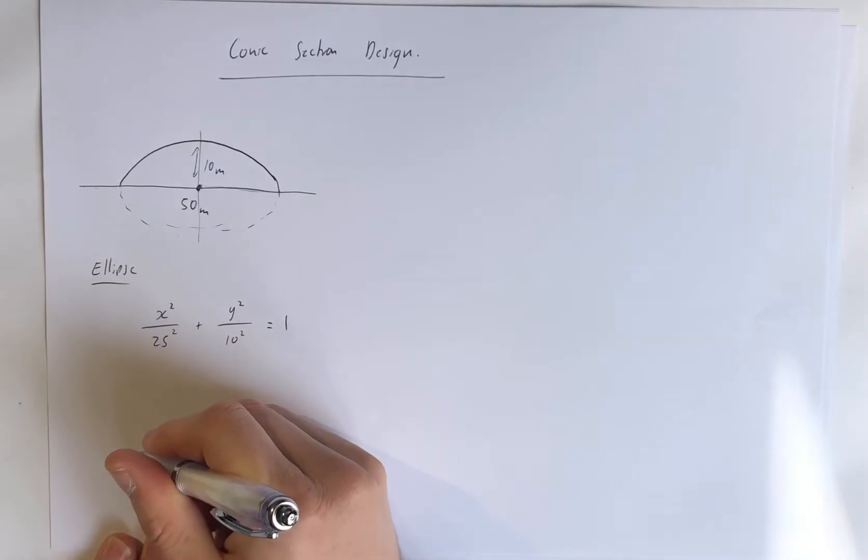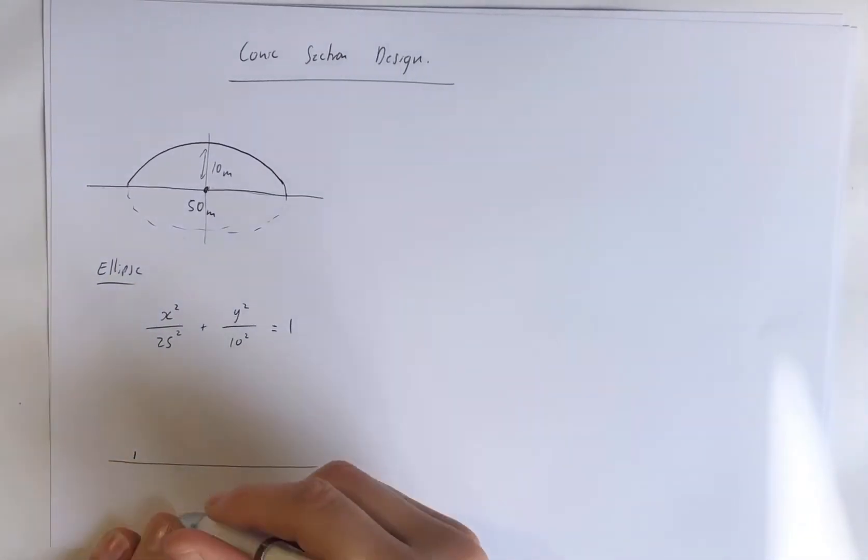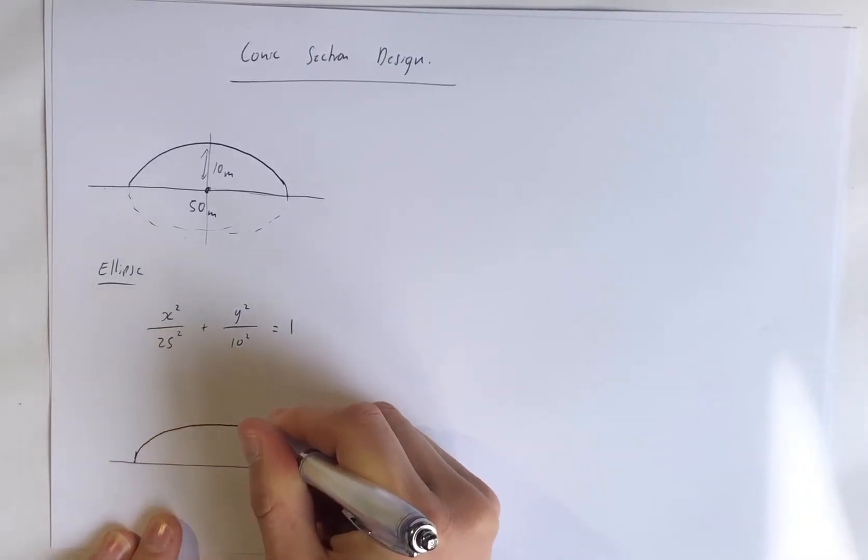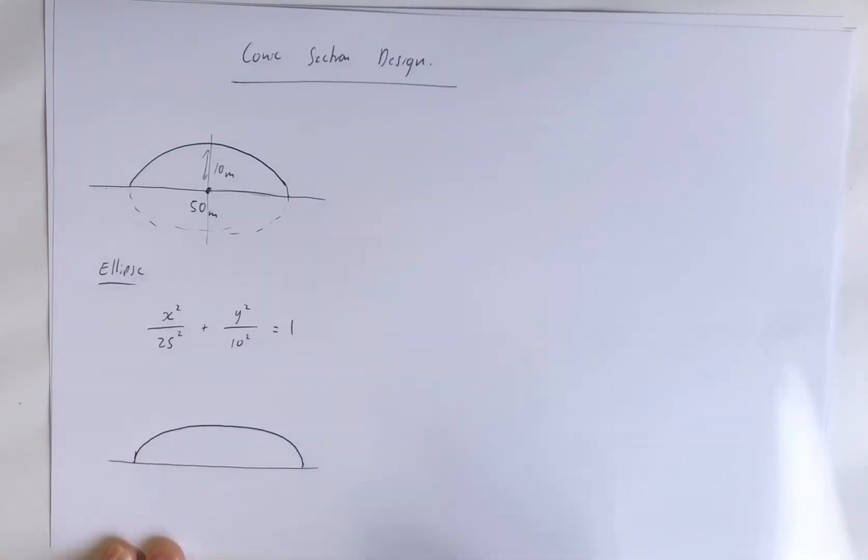So if we want an elliptical roof, it would come out perpendicular to the ground, and then it would come over and go perpendicular to the ground like that, and that would be your elliptical roof.